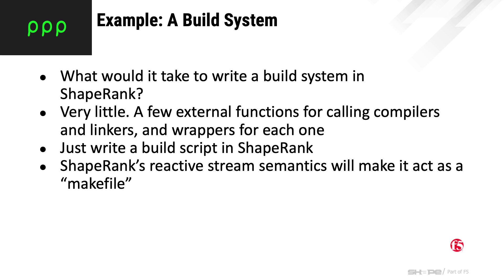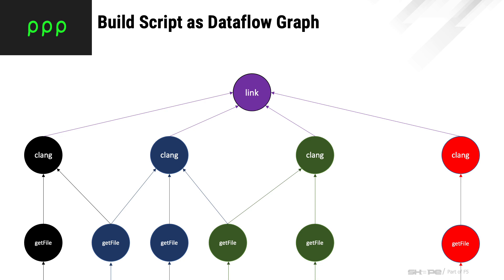To give you a slightly more substantial example, I'm going to walk through a simple build system. Building a build system with ShapeRank turns out to be pretty easy. You need a few external functions to talk to the real world — to call compilers and so forth. Then you write a build script, tell it what you want to build, how you're going to build it, what compilers are called with what arguments, and the reactive semantics of the language will make it act as a makefile that will continuously rebuild as things change. This graph shows a simple scenario with four different target files to compile, color-coded with dependencies between them.